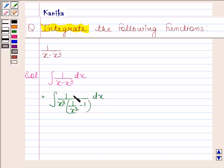You can see that 1 by x cube is the derivative of 1 by x square. So we will now put 1 by x square minus 1 as t.